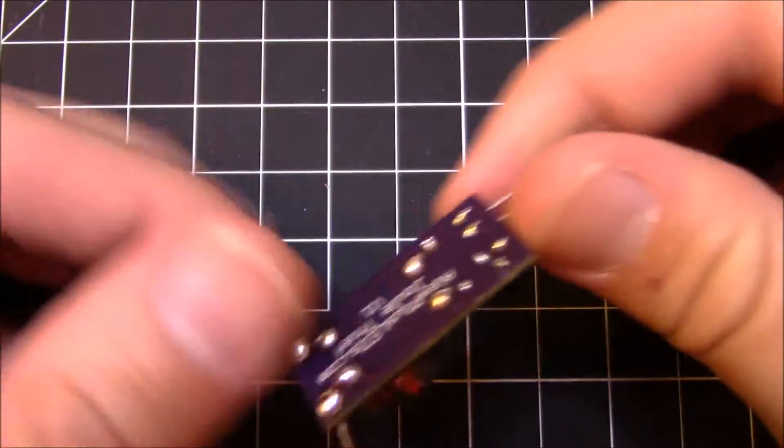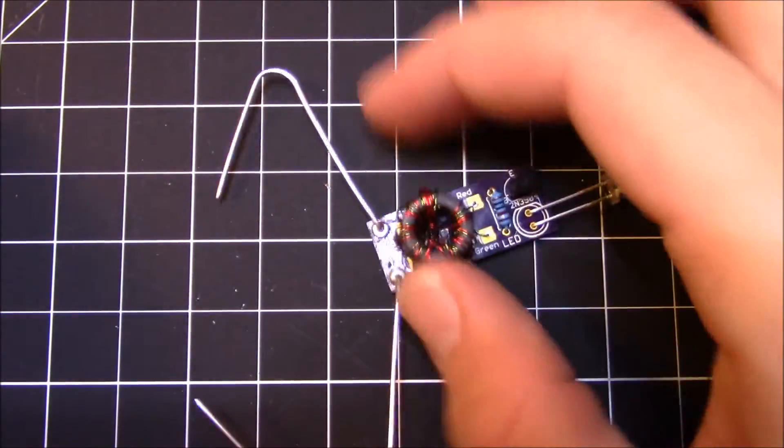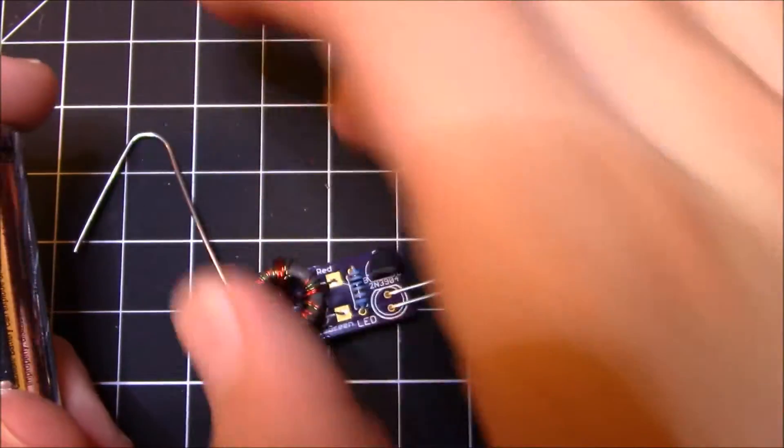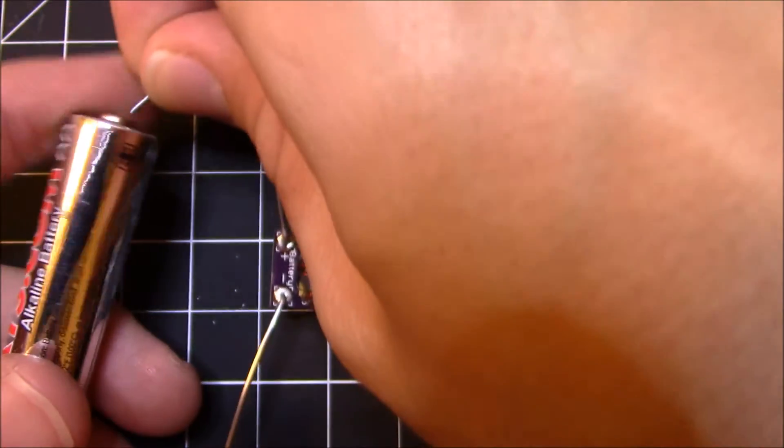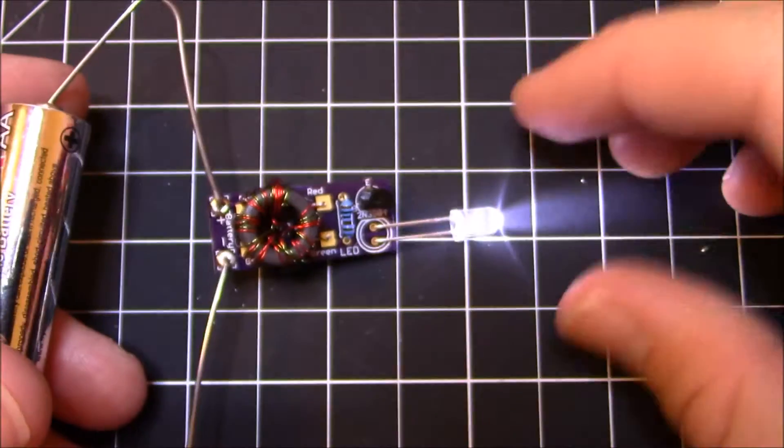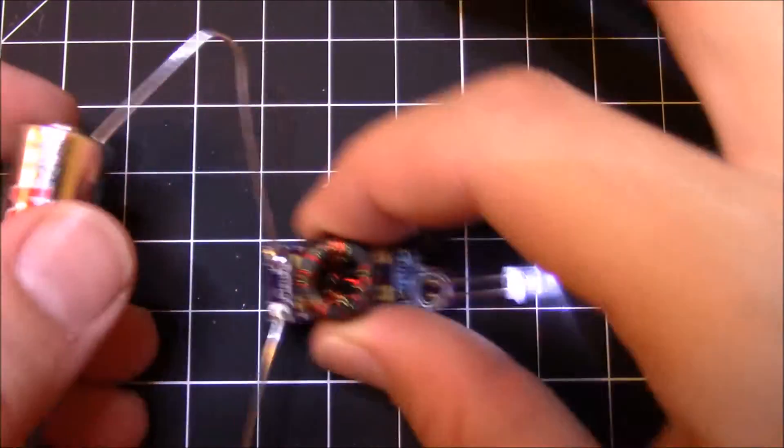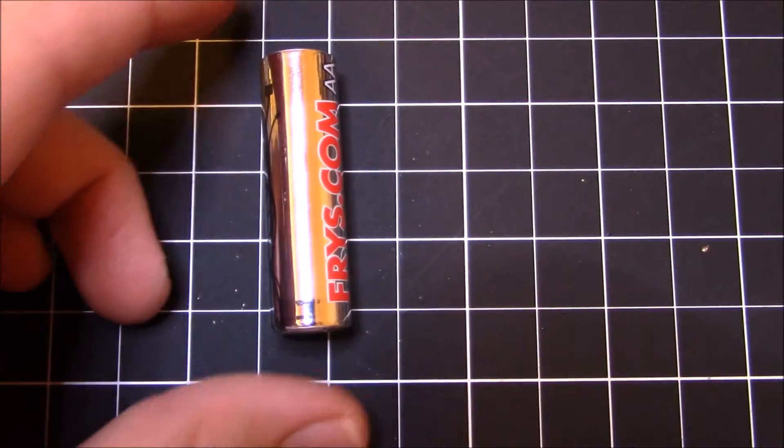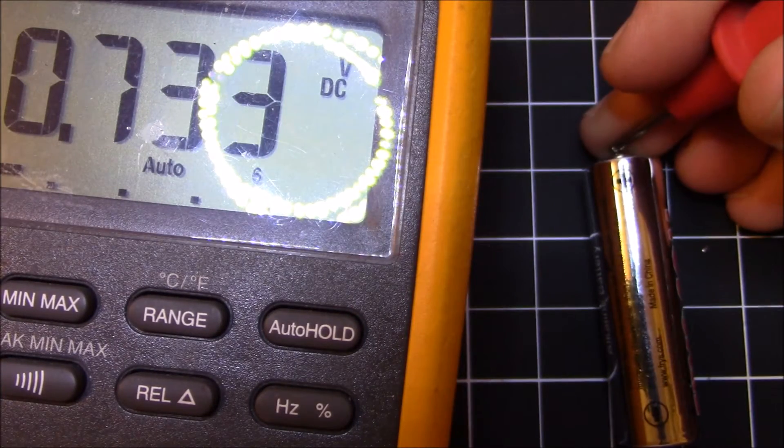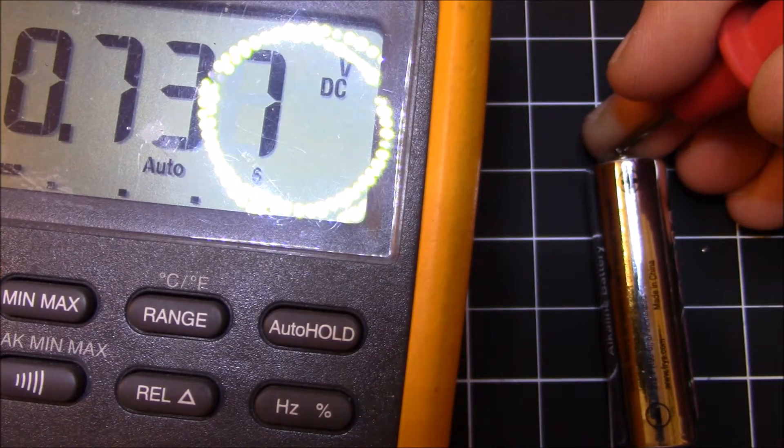What this kit does is suck the last bit of energy out of a battery. So here I have a dead battery. I connect it to the kit and it turns on an LED. However, this battery is indeed dead and let me measure it. Its voltage is 0.7 volts, so that's truly dead.